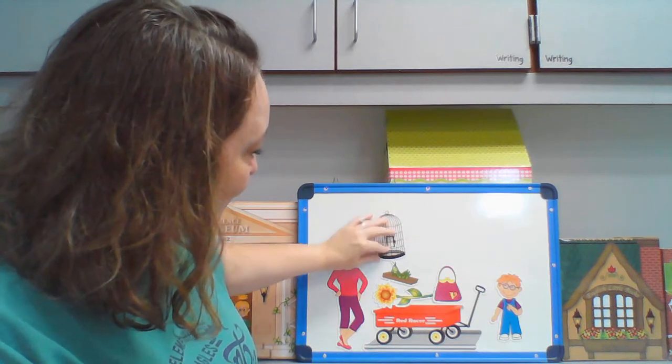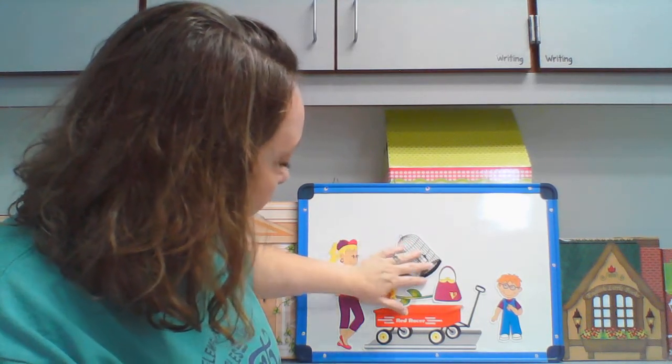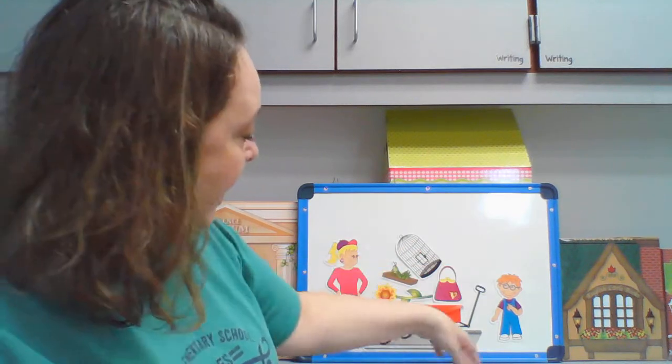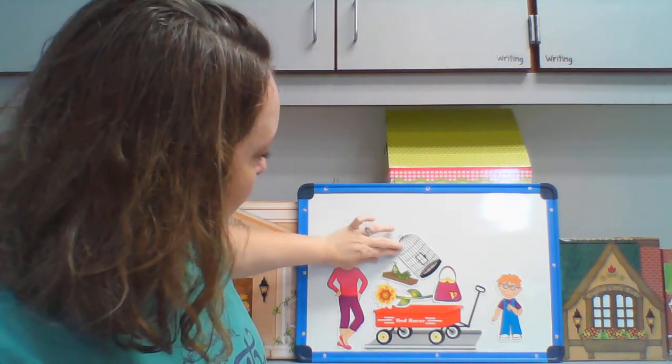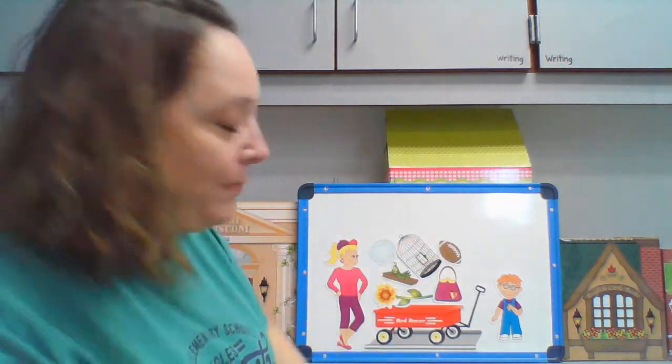So here's her birdcage. She's gonna set it right there. And then he bought a fishbowl. Ooh, that's breakable. And he bought a football.